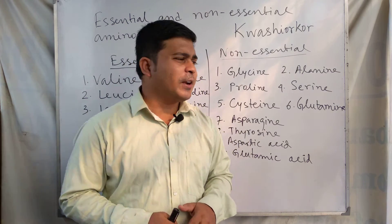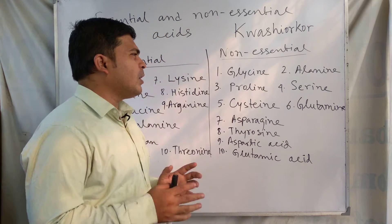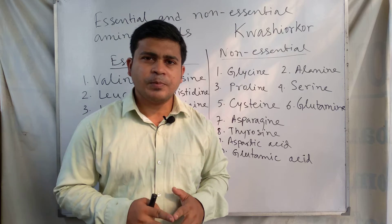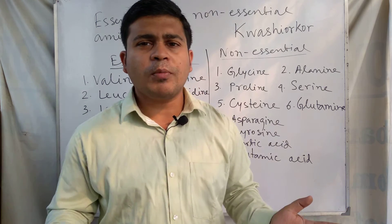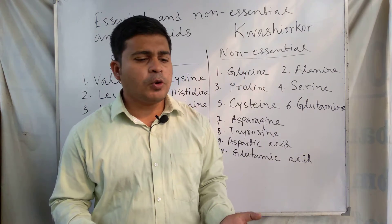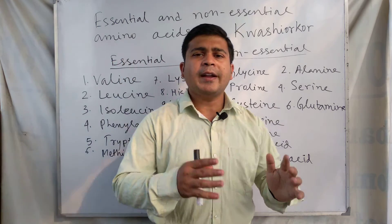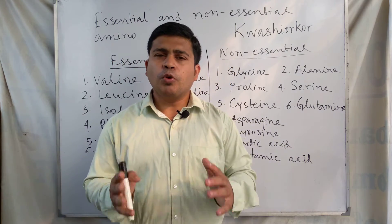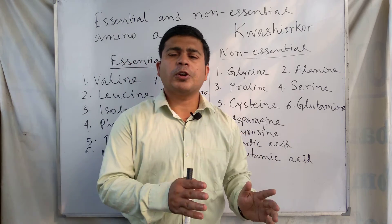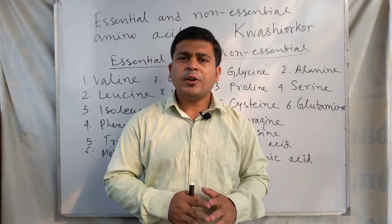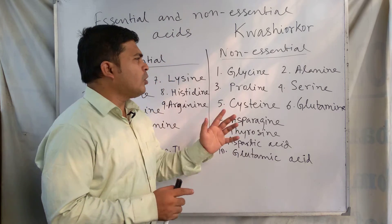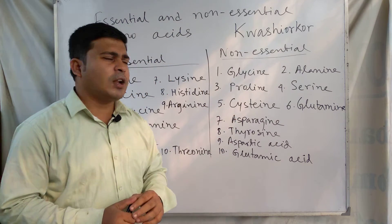We start the discussion regarding essential and non-essential amino acids. First, you have to know what is meant by amino acid. Amino acids are organic compounds where the amine group and the carboxylic acid group are both present in the same molecule. Such compounds are called amino acids, and amino acids may be divided into two classes: essential and non-essential amino acids.